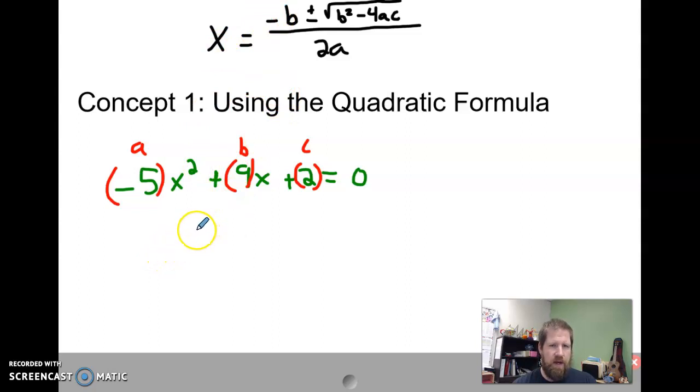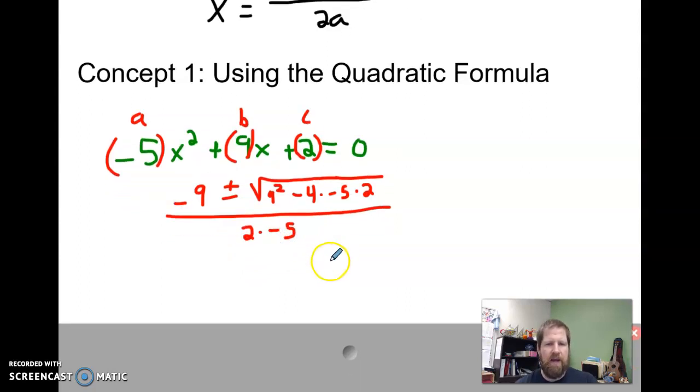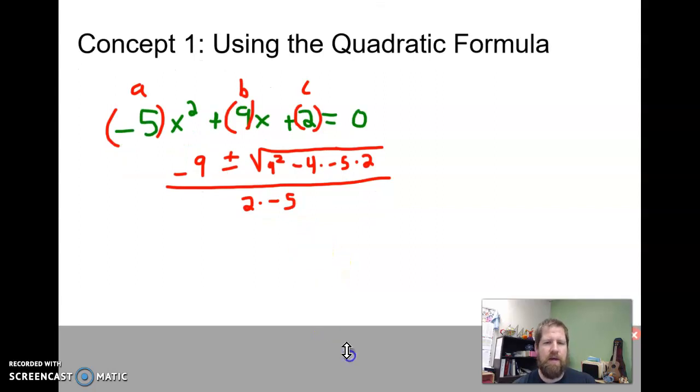Okay, so let's stick it in. We've got negative b, so negative 9 plus or minus the square root of b squared, so 9 squared minus 4 times a, which is negative 5, times c, which is 2, all over 2a, or 2 times negative 5. And now we're just going to straight up order of operations our way through this guy. We'll start down here, 2 times negative 5 is going to give me negative 10. Negative 4 times negative 5 is a positive 20, times 2 is a positive 40.